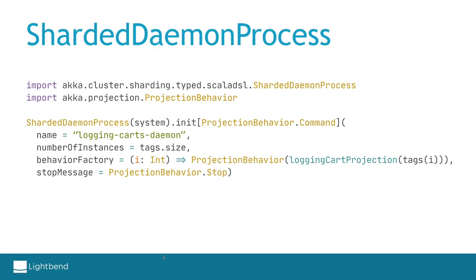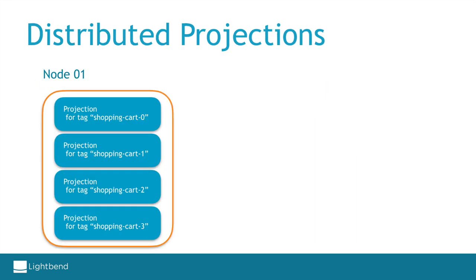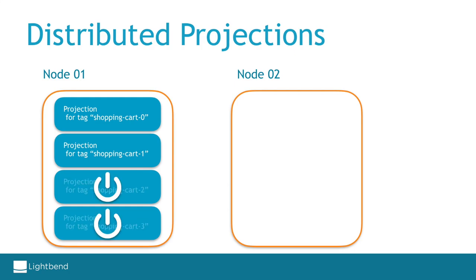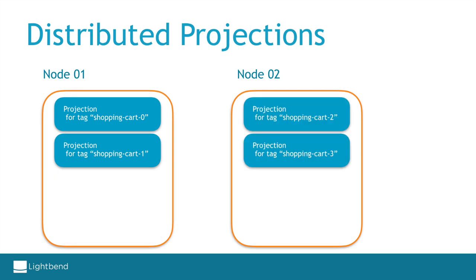To distribute the load we use a Sharded Daemon Process instead of spawning an actor directly. We give it a unique name — 'shopping-cart-daemon' — and tell it the number of instances, which matches the number of tags. The behavior factory is called four times and returns a ProjectionBehavior each time, configured to consume one of the tags. We also define which message to use when stopping the projection — the stop message is used by the daemon to gracefully stop the projection actor during a cluster rebalance or shutdown. When running projections with the Sharded Daemon Process, if you have one node all tags are processed there; when a second node is deployed, some projections are gracefully stopped and transferred to the new node, making use of the new resources.